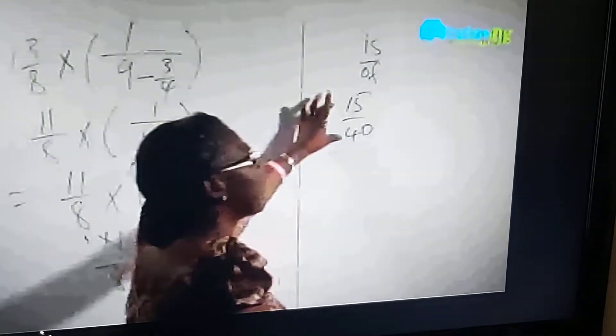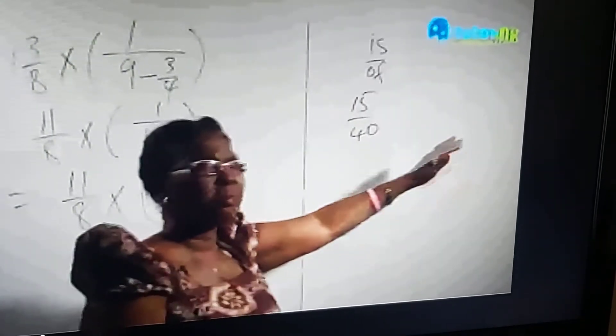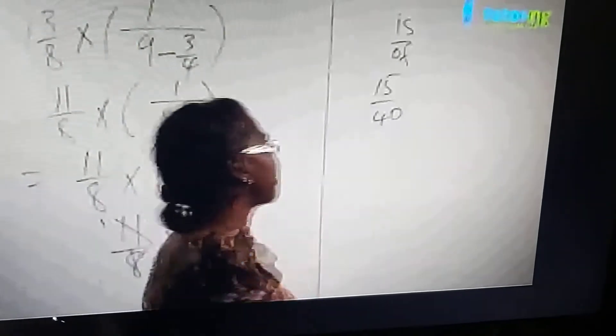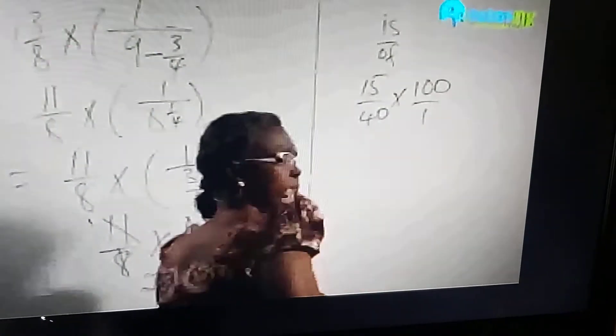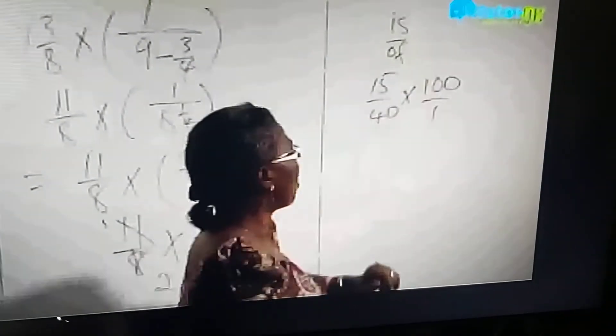Then this is a fraction which we now want to convert to percent by multiplying by 100. So 15 over 40 times 100 over 1. Either that, or...